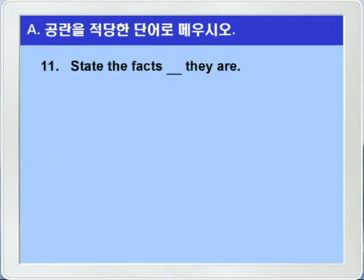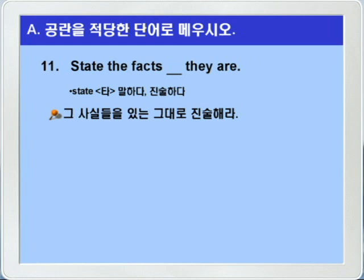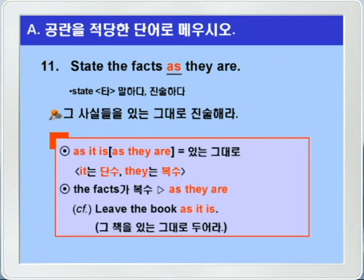11번입니다. state the facts, blank, they are. state가 말하다, 진술하다 이런 뜻이니까, 그 사실들을 있는 그대로 진술해라. blank에는 as가 들어가면 되겠습니다. as는 as it is, 혹은 as they are, 이런 형식으로, 있는 그대로, 이런 의미를 갖습니다. 앞에 받는 명사가 단수면 it, 복수면 they가 되는 것이죠. the facts가 복수니까, as they are. leave the book as it is. 그 책을 있는 그대로 두어라.